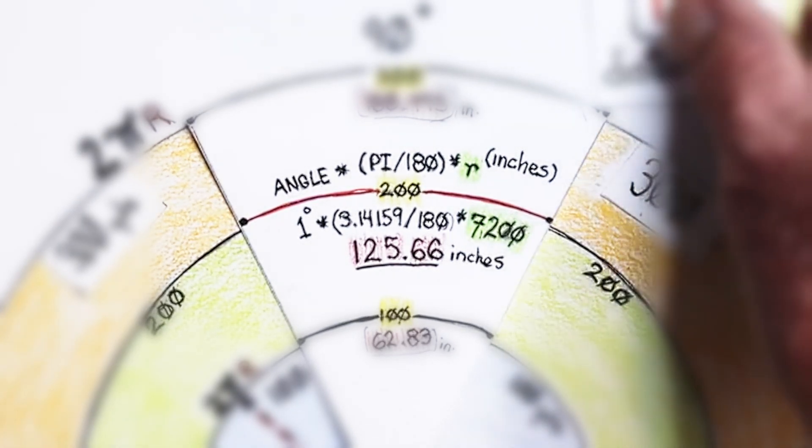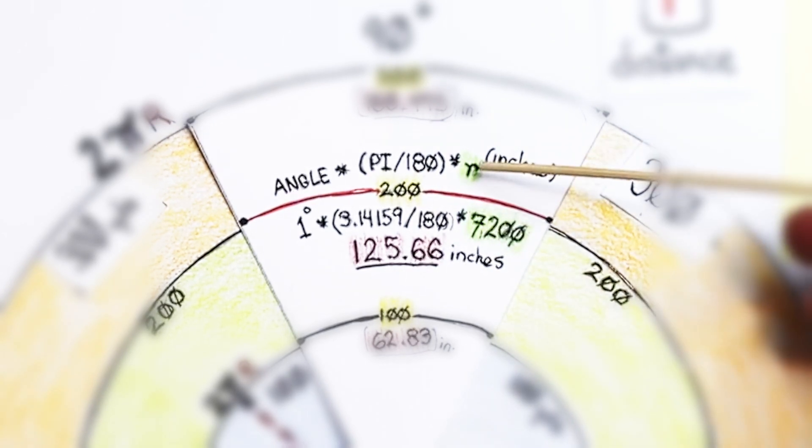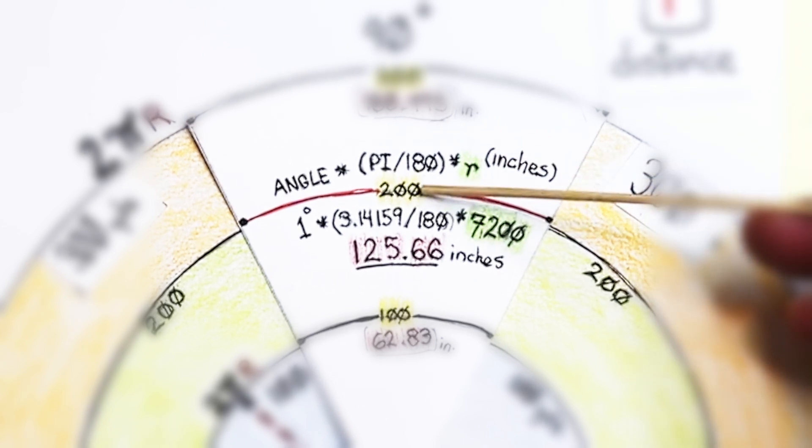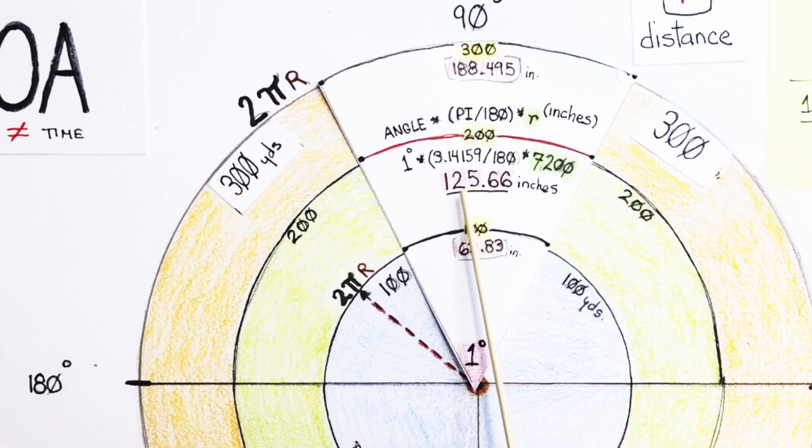So we have r. r is our distance. We're at 200 yards. So I need to put, for r, I need to represent 200 yards in inches. So that's 7,200. And when I do the math, the final value is 125.66.